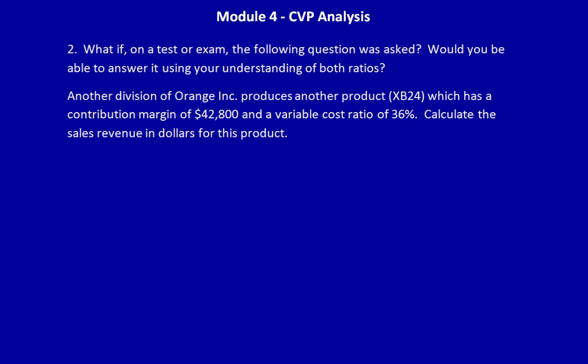Another division of Orange Inc. produces another product, XB24, which has a Contribution Margin of $42,800 and a Variable Cost Ratio of 36%. Calculate the sales revenue in dollars for this product.